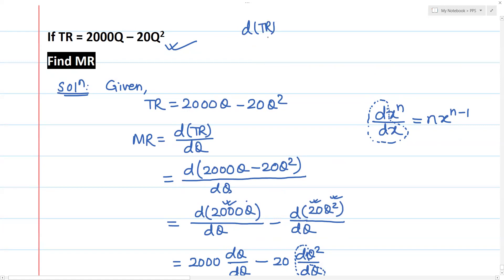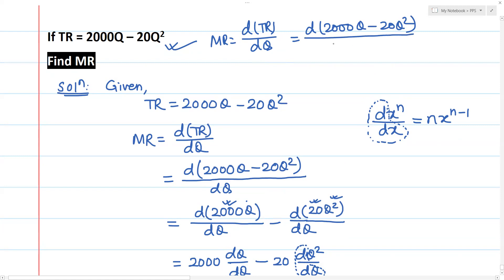DTR by DQ equals marginal revenue. Marginal revenue equals D of 2000Q minus 20Q squared, all over DQ. This is the original process.